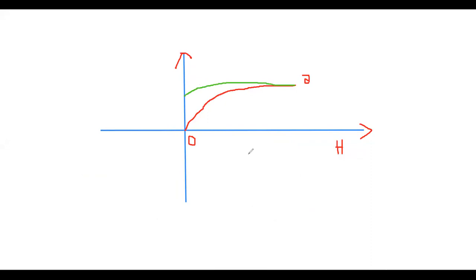We call this phenomenon hysteresis. At the beginning we increase the magnetic field intensity from zero to the saturation region; then when we want to decrease the magnetic field intensity the curve takes a different path. We call this new point B. At point B, H is zero but B is not zero — we call this the residual or remanent magnetic flux density. Even after cancelling the current, we will have a remanent or residual magnetic field.